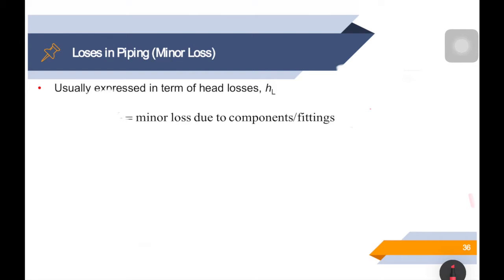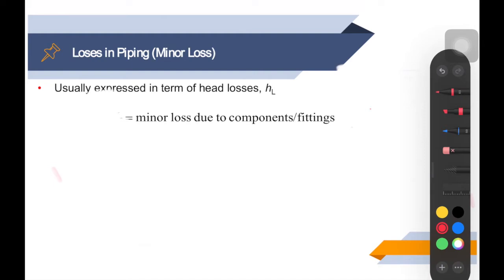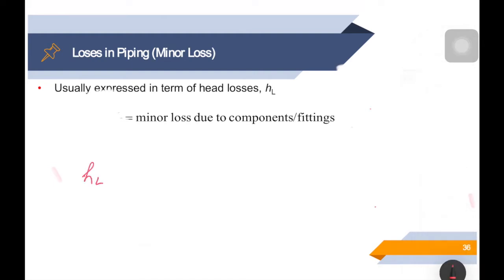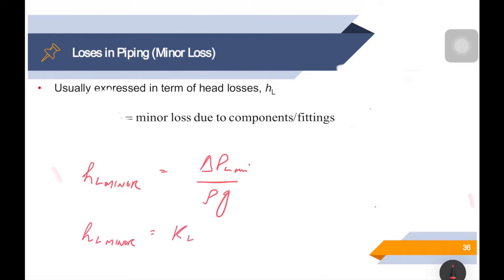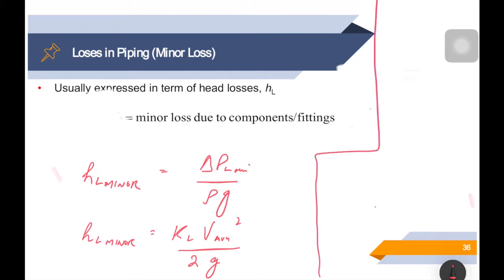Now that we know the pressure loss due to minor components and the minor loss coefficient, we need to calculate head loss HL. HL minor is calculated by dividing the minor pressure loss by rho times g, which gives HL minor equals KL times V-average squared divided by 2g. This is the minor head loss due to components or fittings.